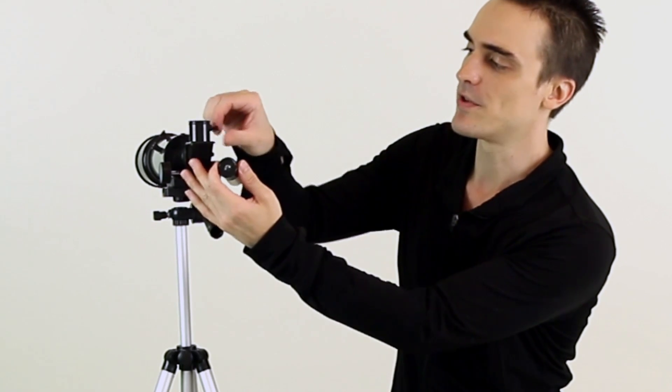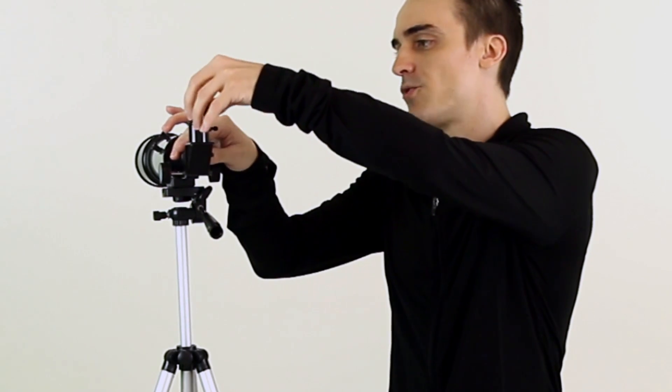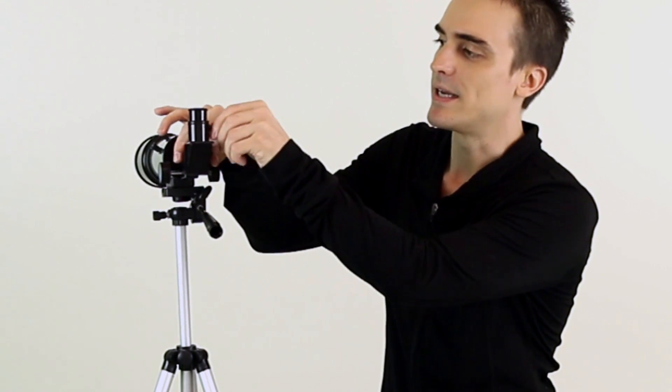Now go ahead and grab one of your eyepieces and remove the protective caps. We'll be inserting it into the top of the angle prism here now. Go ahead and loosen the screw that's on the angle prism. Drop your eyepiece in and tighten the screw back up. I recommend starting any observation with the 20 millimeter eyepiece because it's the lowest magnification eyepiece and it's actually much easier to find objects and really get them into focus.